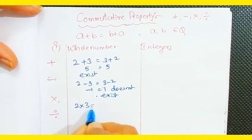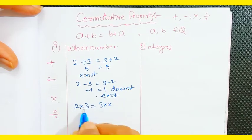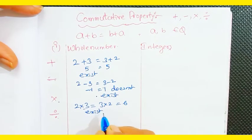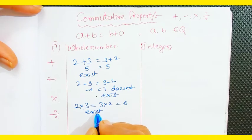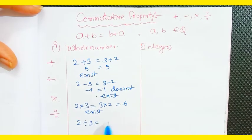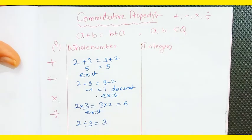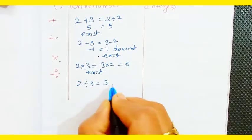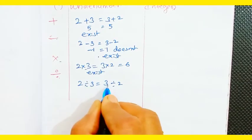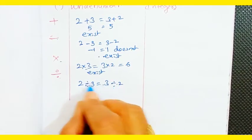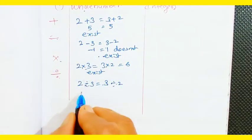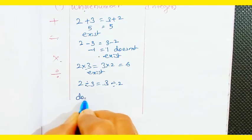For multiplication: 2 × 3 = 3 × 2. Both give 6, so the commutative property exists — it satisfies. For division: 2 ÷ 3 versus 3 ÷ 2, giving 2/3 and 3/2. These are not whole numbers, so the commutative property does not satisfy for whole numbers under division.